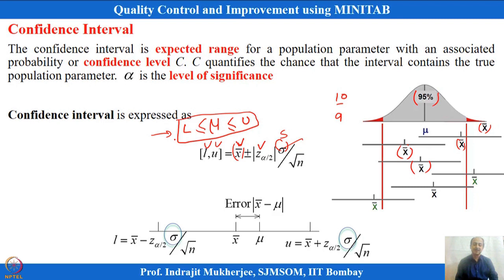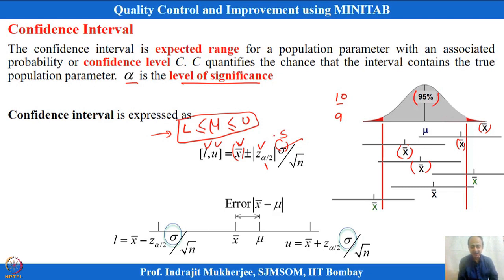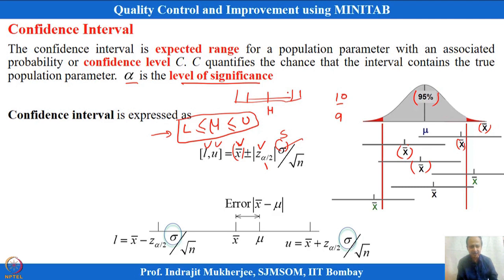If I want to be more confident, I need to decrease alpha, and the calculation will give a wider range. That means if I increase the level of confidence — say from 95% to 99% — alpha has to be decreased. Expanding the band from 95% to 99% means the rejection area goes down and alpha comes down.